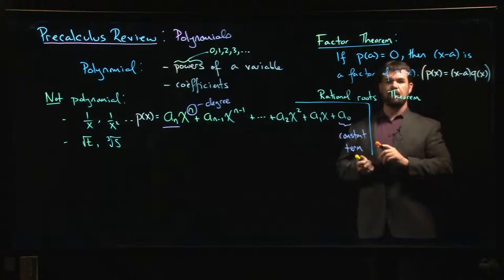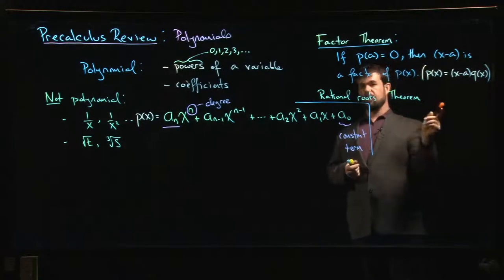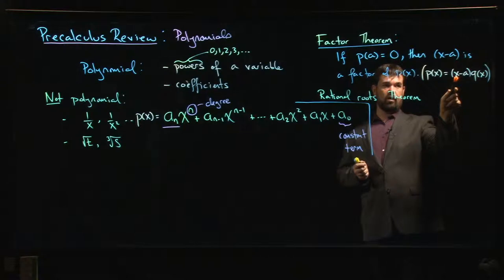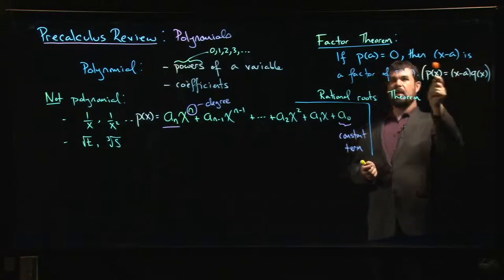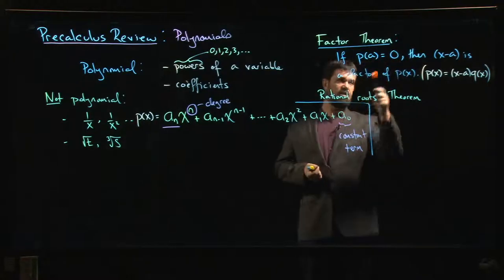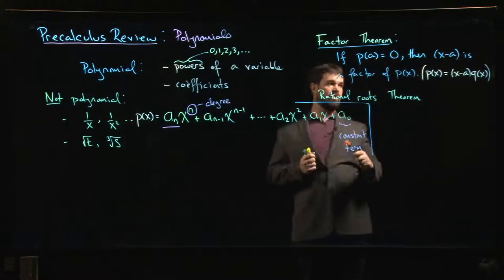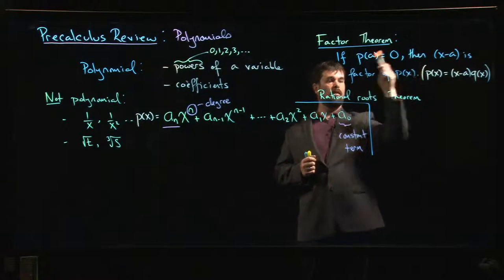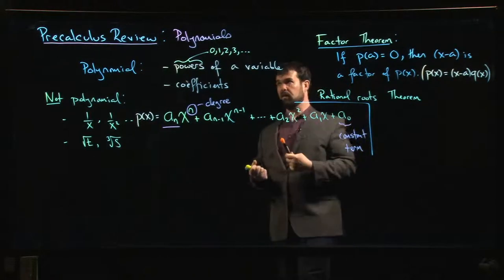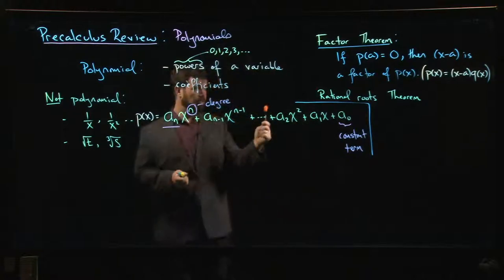In fact, this statement is what a mathematician might call an if-and-only-if statement. If you have this factor, then certainly plugging in x equal to a gives you zero because (a - a) gives you zero. But the more useful direction is this one: if you plug in the number and you get zero, then you know you have a factor. So you can get started on factoring. If you're trying to factor a polynomial, this is a key result.